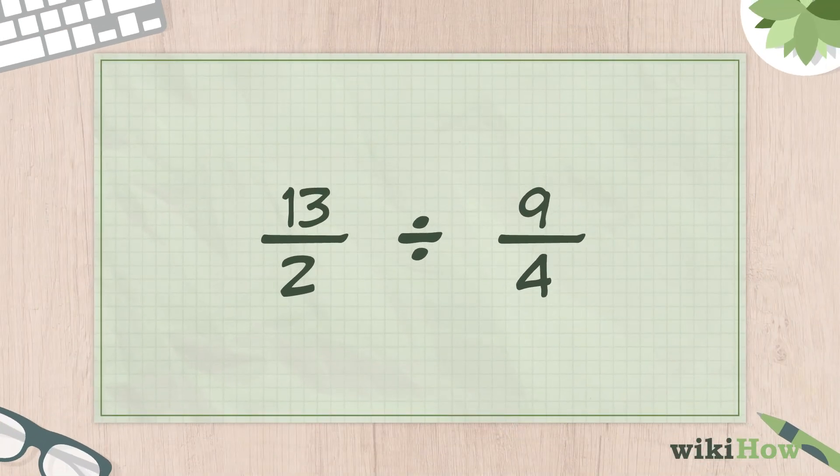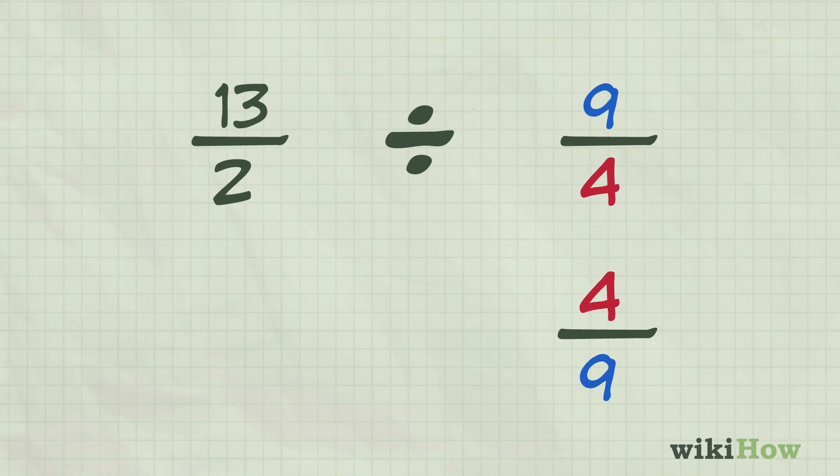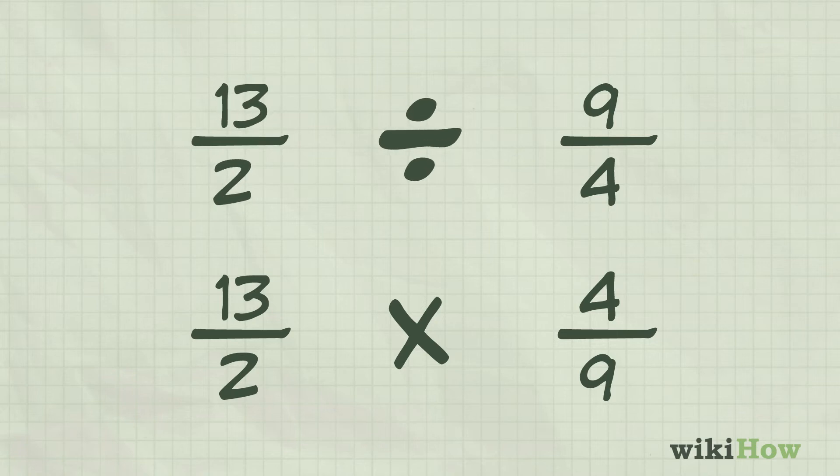To do the division problem, find the reciprocal of the divisor by flipping the fraction over. Then multiply the two fractions together. So in our example, 13 over 2 divided by 9 over 4 becomes 13 over 2 times 4 over 9.